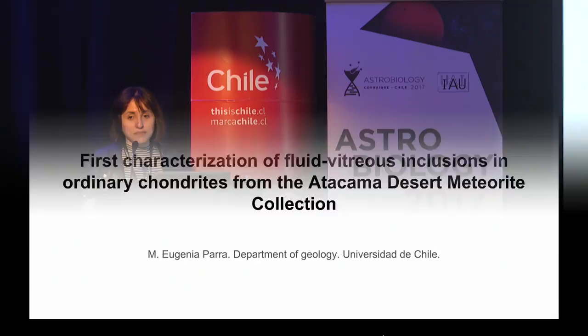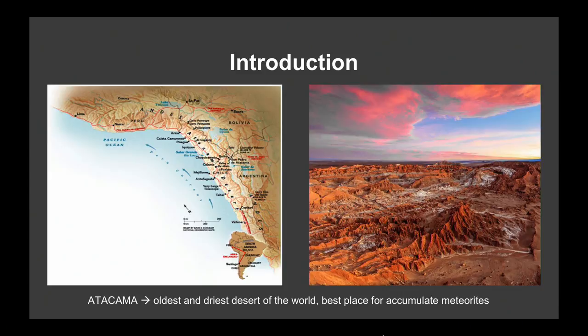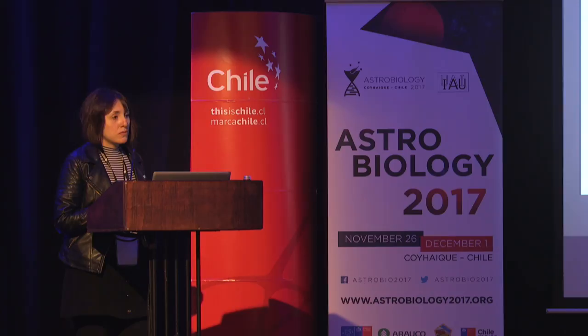Ordinary chondrites come from the Atacama Desert, which is the oldest and driest desert in the world. That allows meteorites to accumulate because we have an old landscape and a low level of water for the weatherization process.